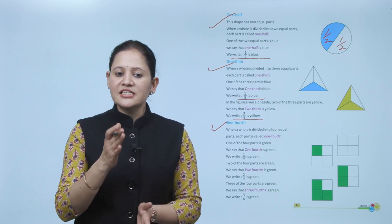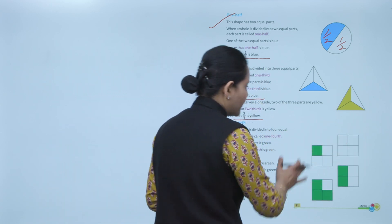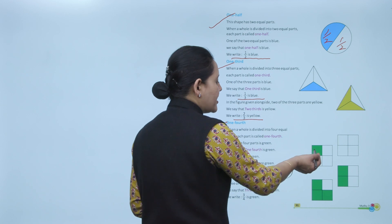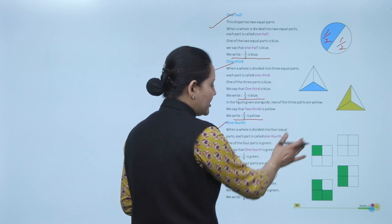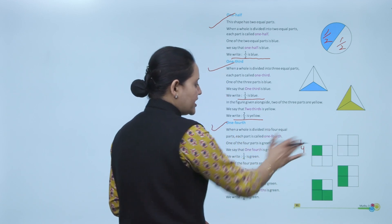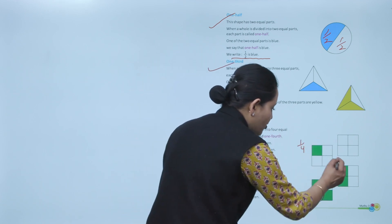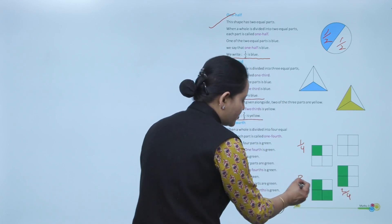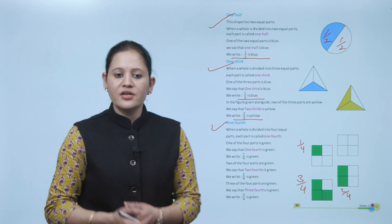Three of the 4 parts are green — we write it as 3 fourths, or 3 by 4. Here, this figure is divided into 4 equal parts. If 1 part is shaded, the green part represents 1 by 4. Here 2 are shaded, so they represent 2 by 4. Here 3 are shaded, so it represents 3 by 4.